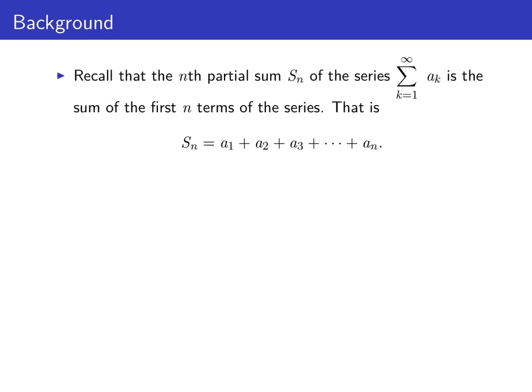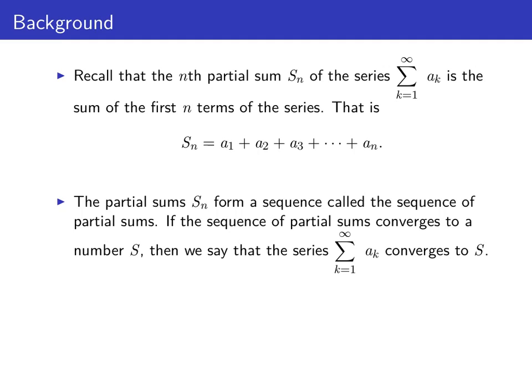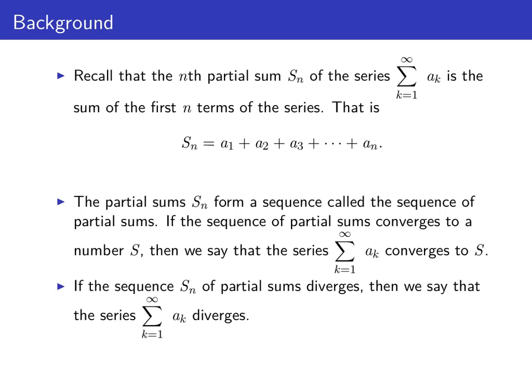To begin, recall that the n-th partial sum of the series is just the sum of the first n terms of the series. The partial sums form a sequence we call the sequence of partial sums. If that sequence of partial sums converges to some number S, then we say that the series converges. Whereas if the sequence of partial sums diverges, then we say that the series itself diverges.